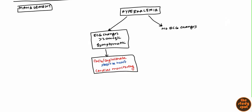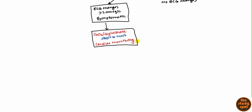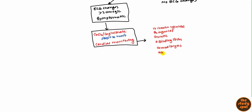After stabilizing the heart, move on to fixing the actual potassium level. This can be done with IV insulin and glucose — insulin pushes potassium into the cell, and glucose is given to prevent hypoglycemia. Beta-2 agonists also help, as they push potassium into the cell. Diuretics, especially loop diuretics, help remove potassium via the kidneys. There are also potassium-binding resins you can use. Hemodialysis is another option if treatment becomes refractory. If the patient has acidosis, consider sodium bicarbonate.